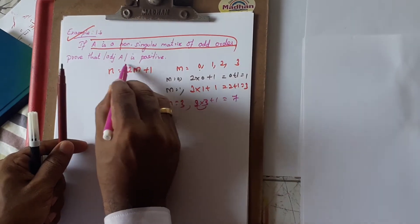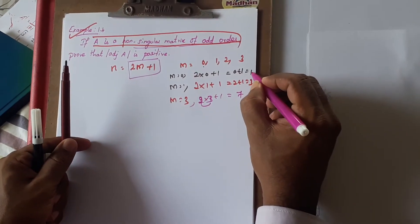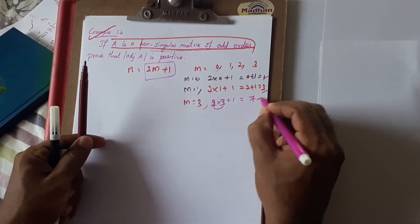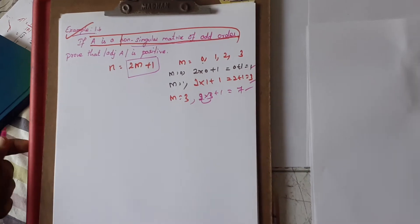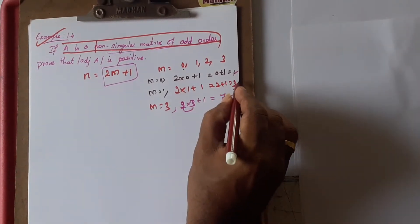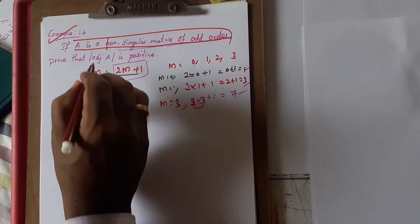Whatever N you take will be a non-singular matrix of odd order. Each time 1, 3, 7, that is odd numbers. So N equals 2M plus 1 is the main condition.